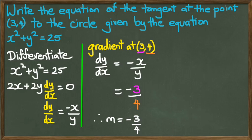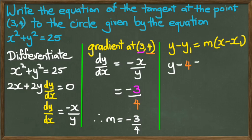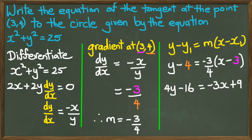So, now we have a point, and we have a gradient, so we can go with our equation of a straight line formula. Replacing everything, we're going to get y minus 4 equals negative 3/4 multiplied by (x minus 3). And if we rearrange this, we would get 4y minus 16 equals negative 3x plus 9. Or, we could just leave it in this form: 4y plus 3x minus 25 equals 0.